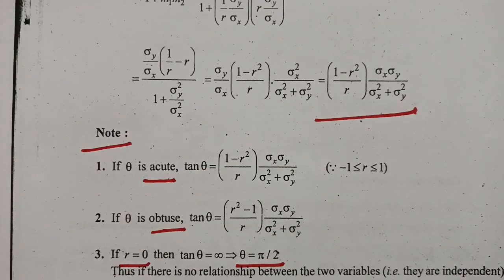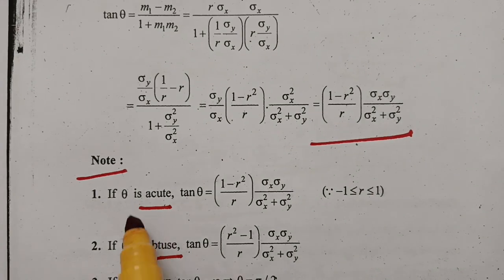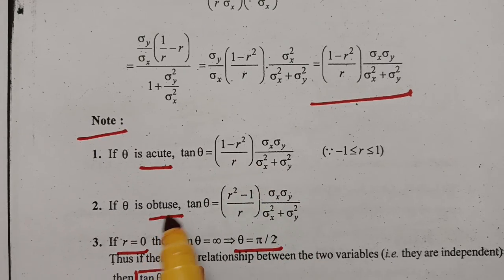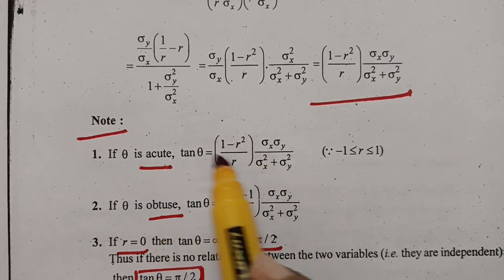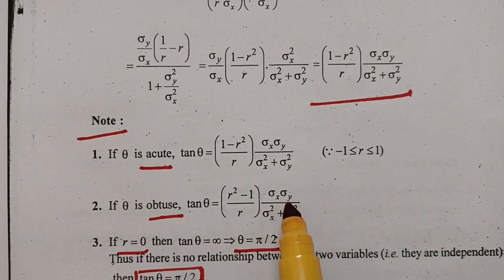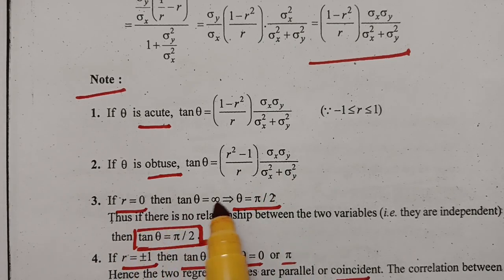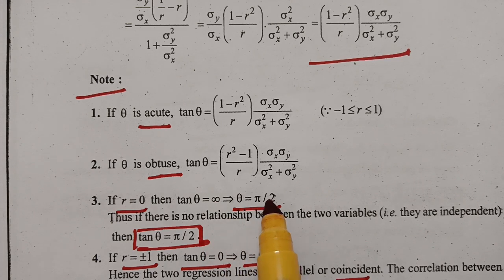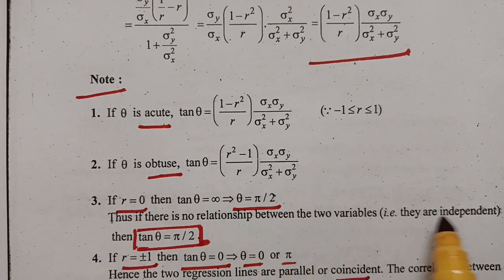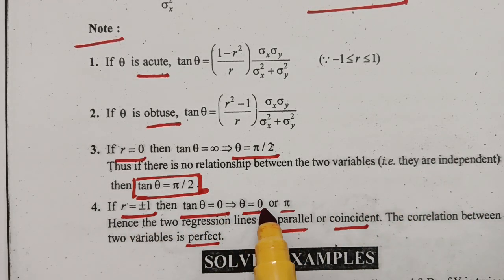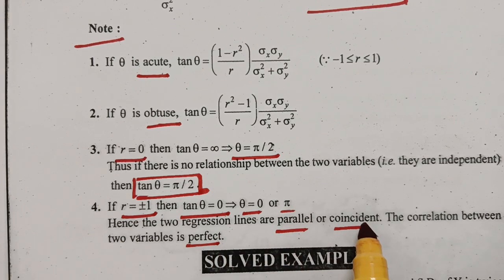To summarize: after finding the angle, if it is acute, the tan θ formula is as given; if obtuse, the numerator becomes r² − 1. If r = 0, tan θ = infinity and θ = π/2 (variables independent). If r = 1, tan θ = 0 and θ = 0 or π, so the two regression lines are parallel or coincident and the correlation is perfect.